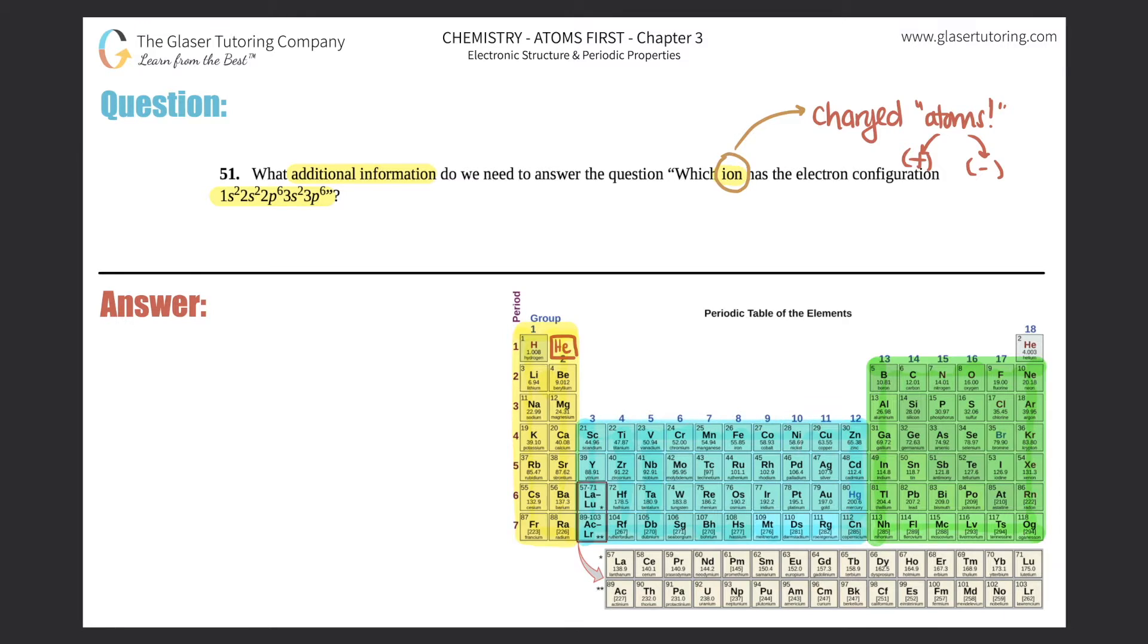So they're saying that whatever atom we're talking about here that has this electron configuration is a charged atom, it's an ion. Now this is the electron configuration with either the loss or gain of electrons.